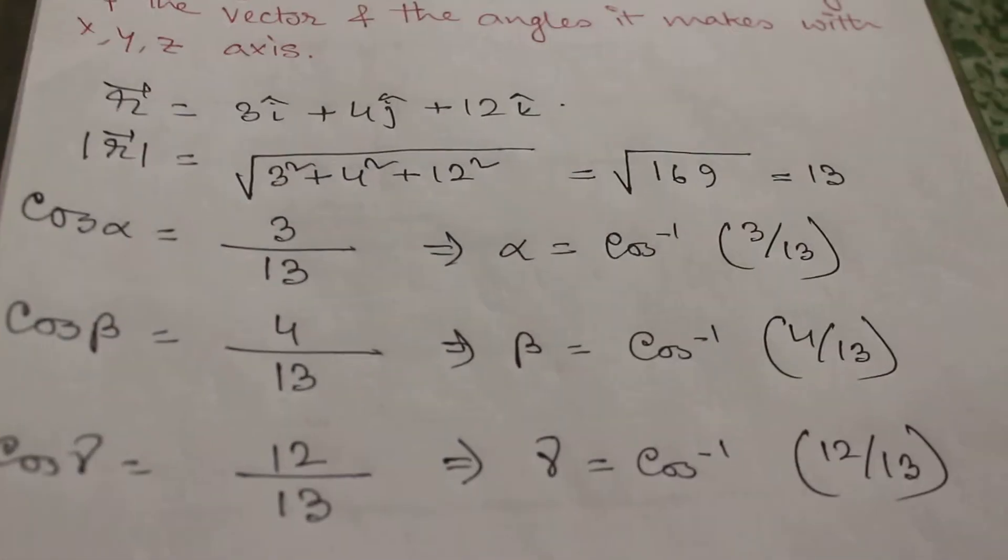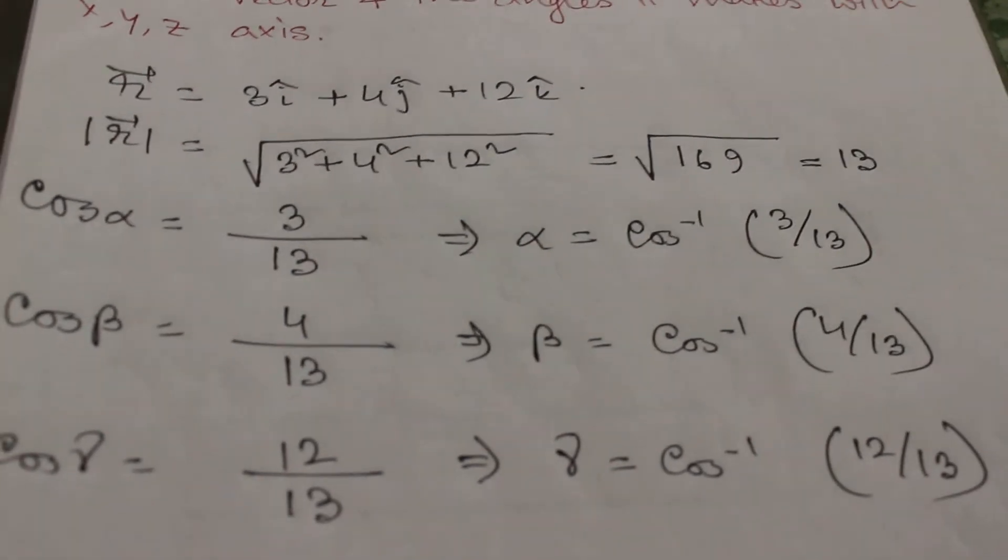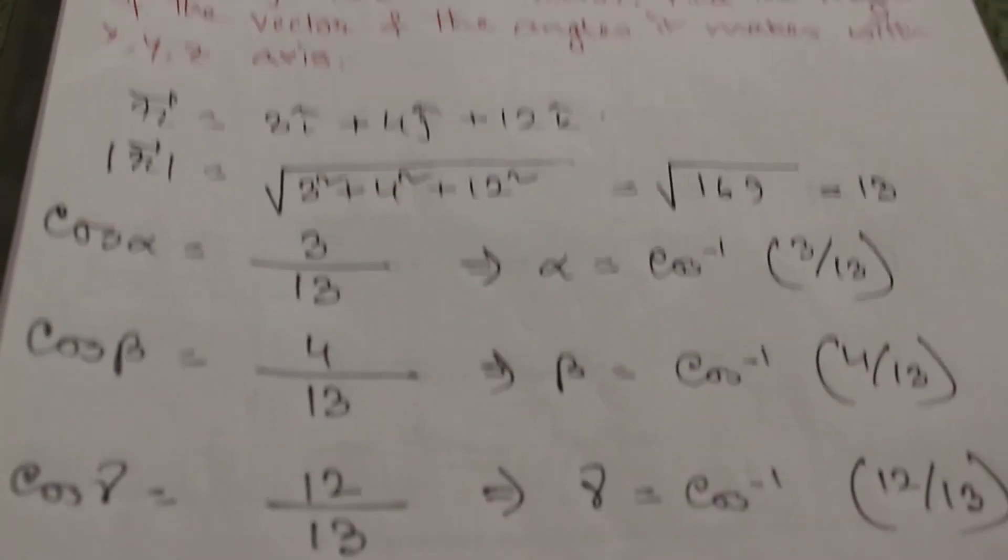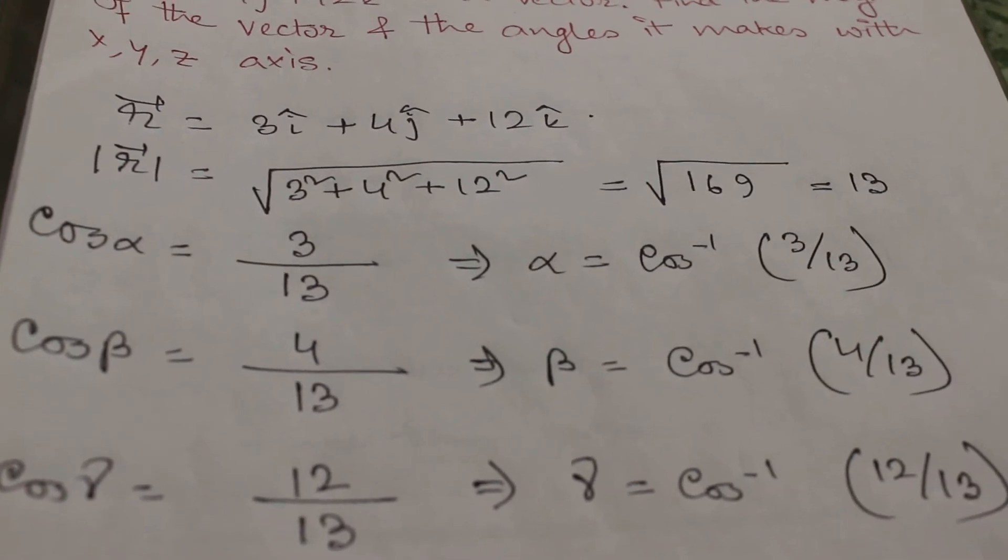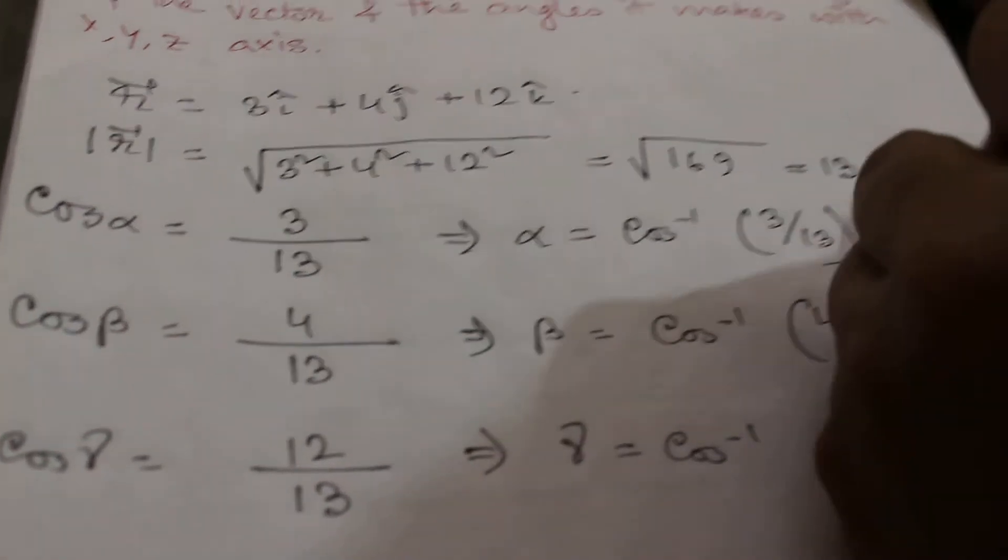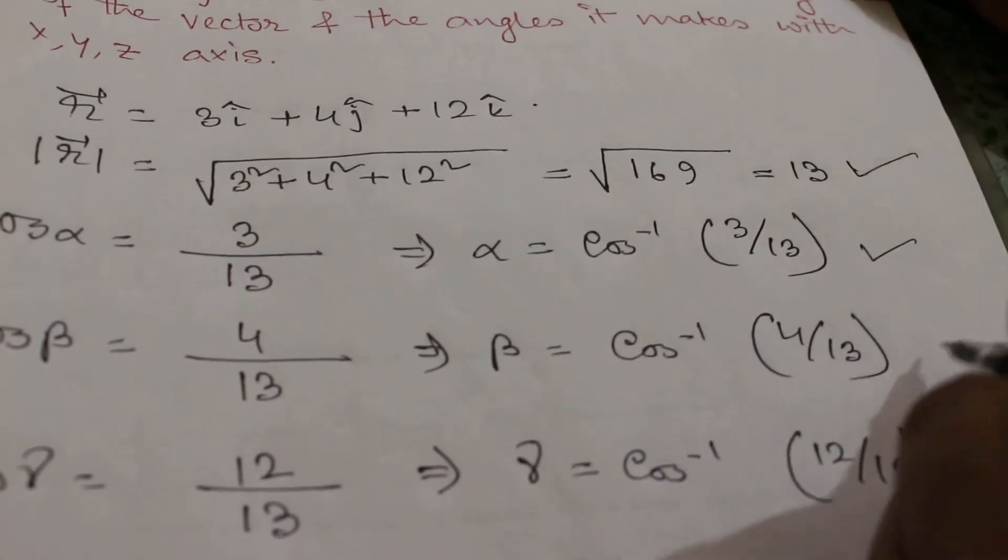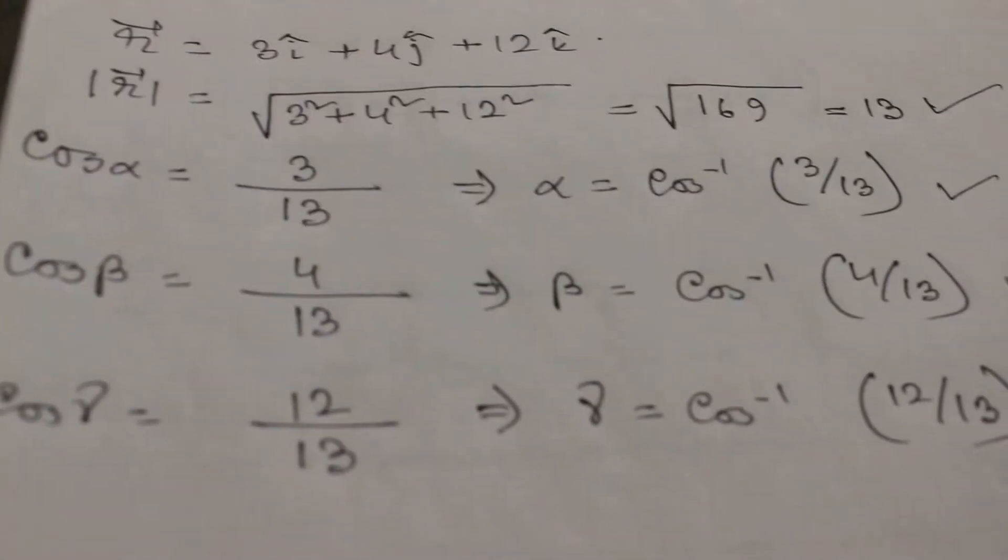So as I have told earlier, alpha, beta, gamma are the angles made by the vector r with respect to x, y, z axis respectively. So this is the magnitude of that vector and these are the angles alpha, beta, gamma.